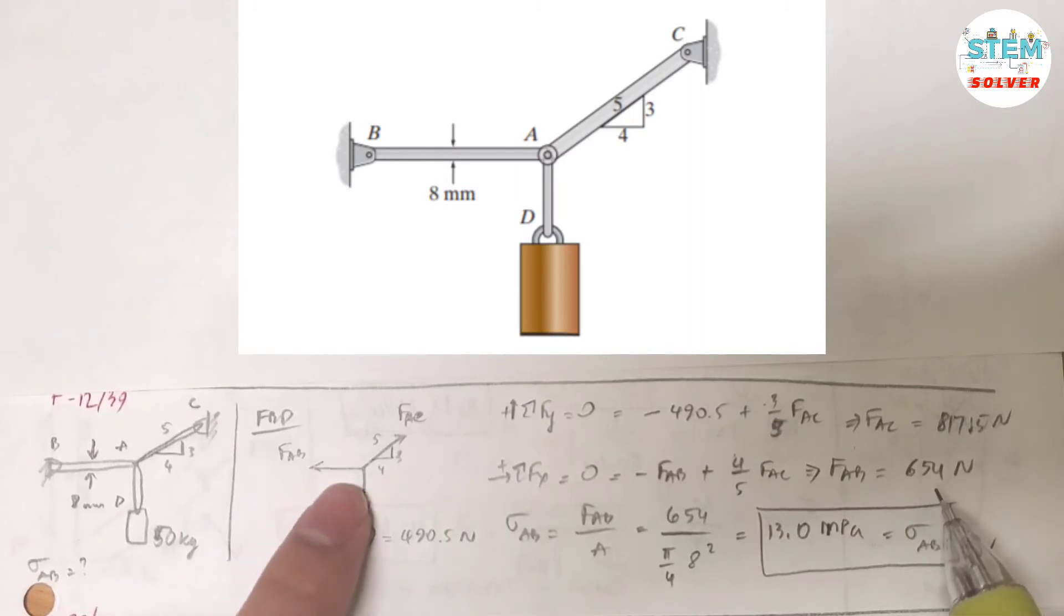We're going to do the same thing using the equilibrium equation, which is the summation about the X axis set equal to zero. I have negative FAB plus 4 over 5 times FAC. FAC is what we just found, so plug them in and I found FAB equals 654 N.